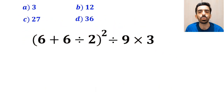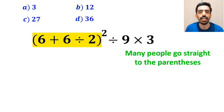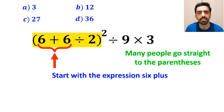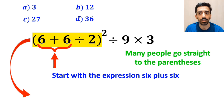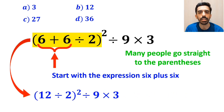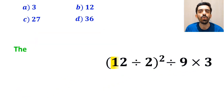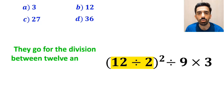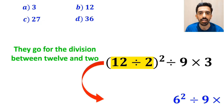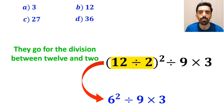In the first step, many people go straight to the parentheses and start with the expression 6 plus 6. So instead of the full expression, they write (12 ÷ 2)² ÷ 9 × 3. In the next step, they go for the division between 12 and 2, and write (6)² ÷ 9 × 3.